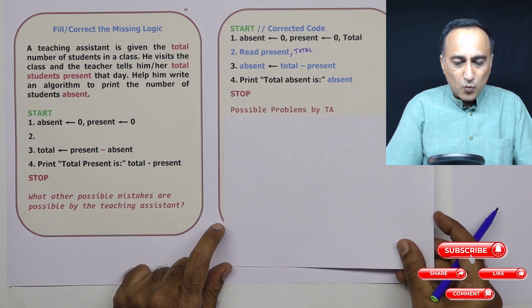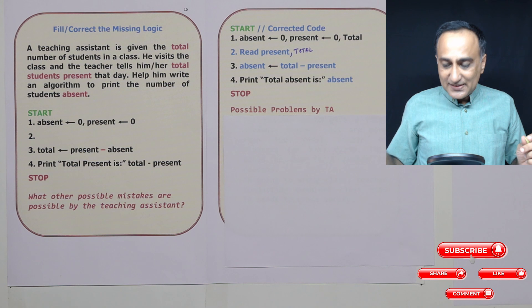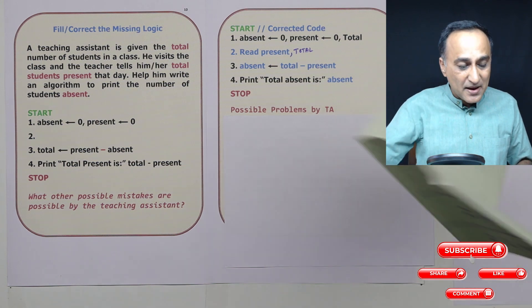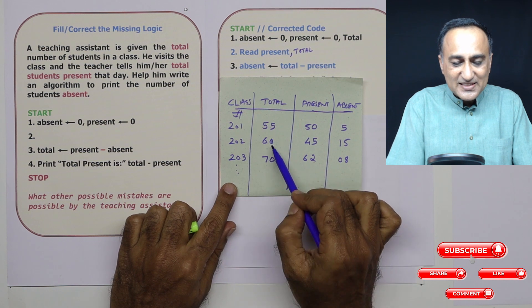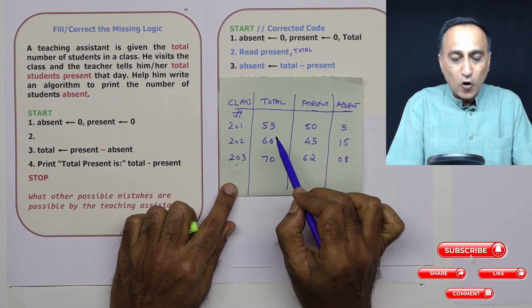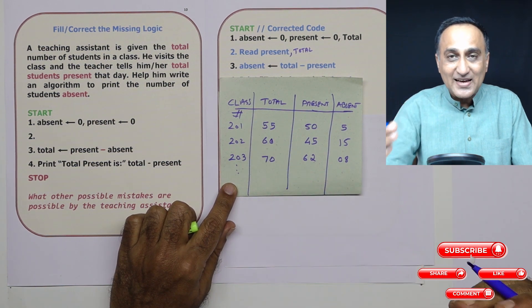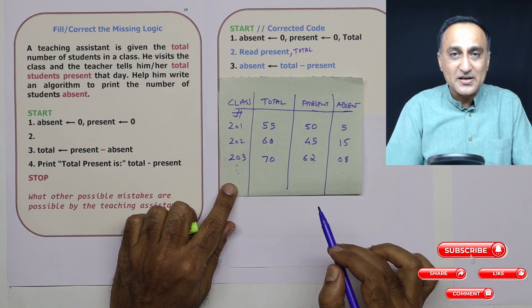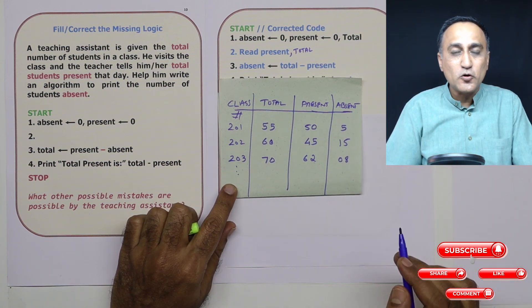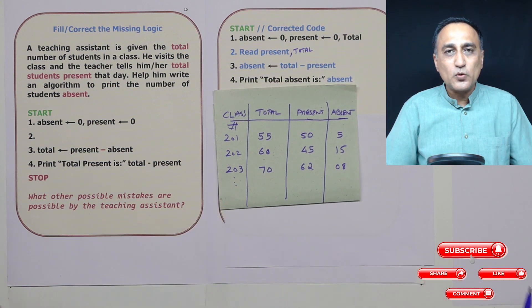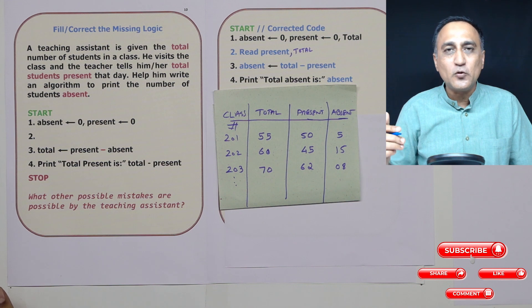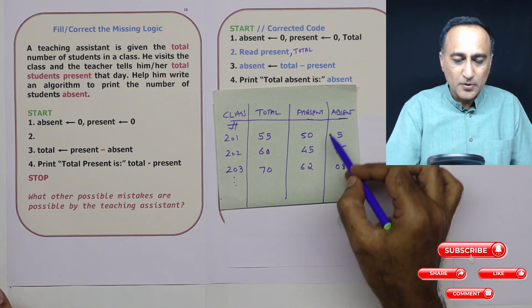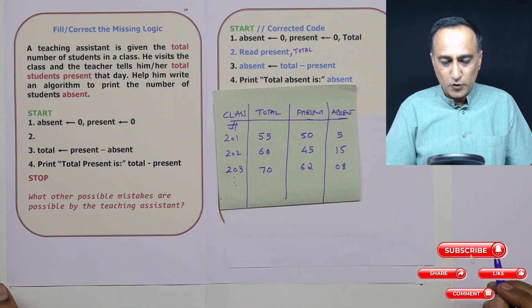Now, what are the other problems that this teaching assistant may make or face? For example, if he enters this data wrongly, or if he goes to the wrong class, and a souvenir present, then his output is also going to be incorrect. This is what is meant if you give wrong input to computer, it is not smart enough to correct your wrong input, it's going to provide you the wrong output.